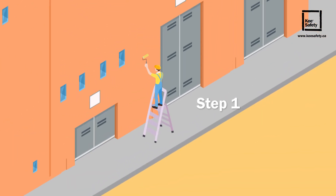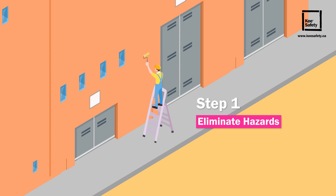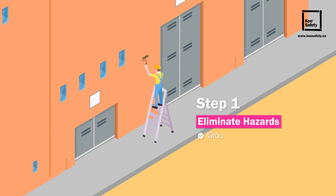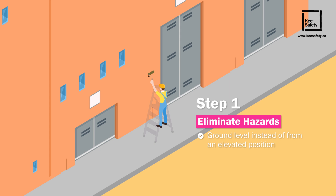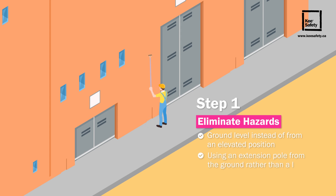Step 1: Eliminate hazards. The preferred solution to all fall hazards is elimination of the danger. This can be achieved by performing tasks at ground level whenever possible. For example, using an extension pole or similar tools can allow workers to complete tasks safely from the ground, rather than a ladder.